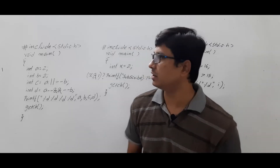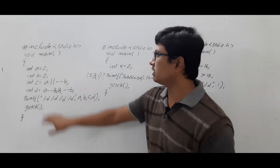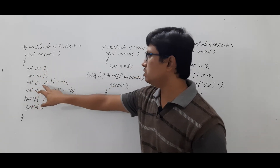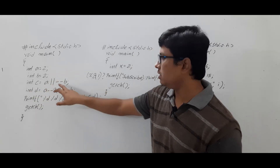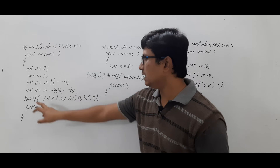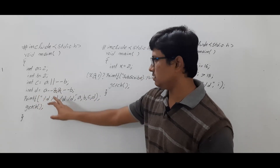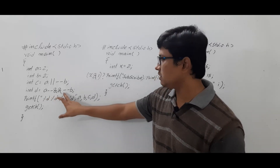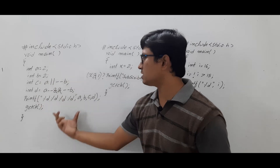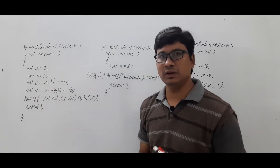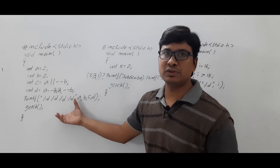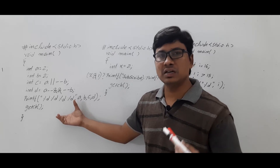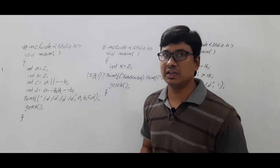Let me discuss program one. I have written: #include <stdio.h>, void main, int a = 2, b = 2. int c = a logical OR (--b), which is pre-decrement. int d = a-- logical AND (--b), which is post-decrement for a and pre-decrement for b. After performing these, I want to display the a, b, c, and d values. If you know the answer, pause the video, try by yourself, and verify whether your answer is right or wrong.